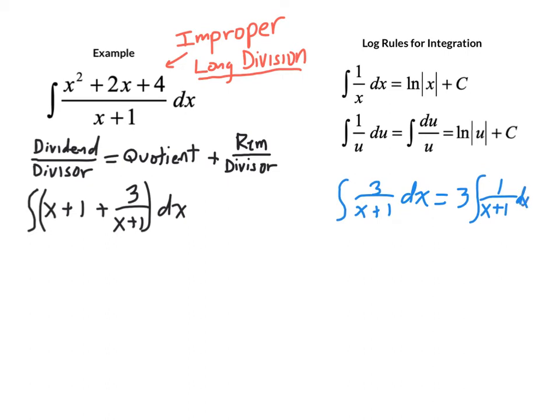And if we do that, then we see that we have u in the denominator. If u is x plus 1, du is 1 dx. So this thing is ready to go. And it's du over u, so it's a log rule. So the antiderivative of that particular part of our integral is 3 times the natural log of the absolute value of x plus 1 with the plus c.